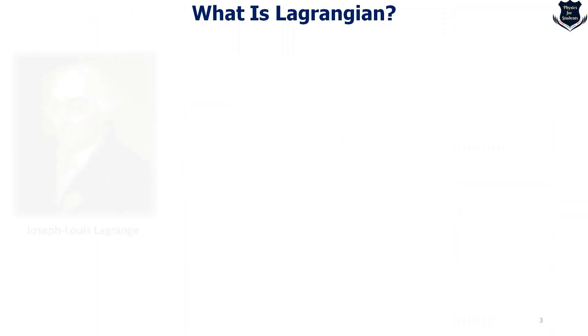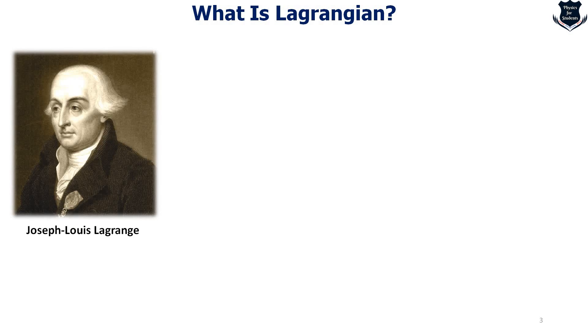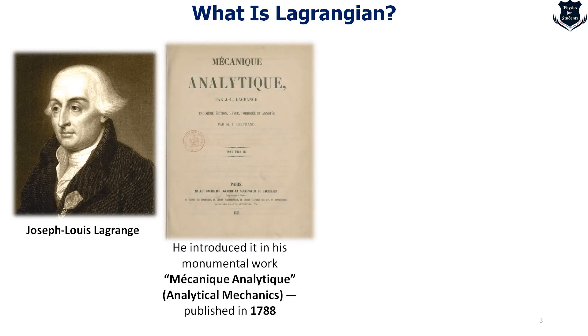The concept of Lagrangian was first propounded by Joseph Louis Lagrange. He was an Italian and naturalized French mathematician, physicist and astronomer who propounded this concept in a very important mathematical book, Mechanic Analytic or Analytical Mechanics, which was published in 1788.